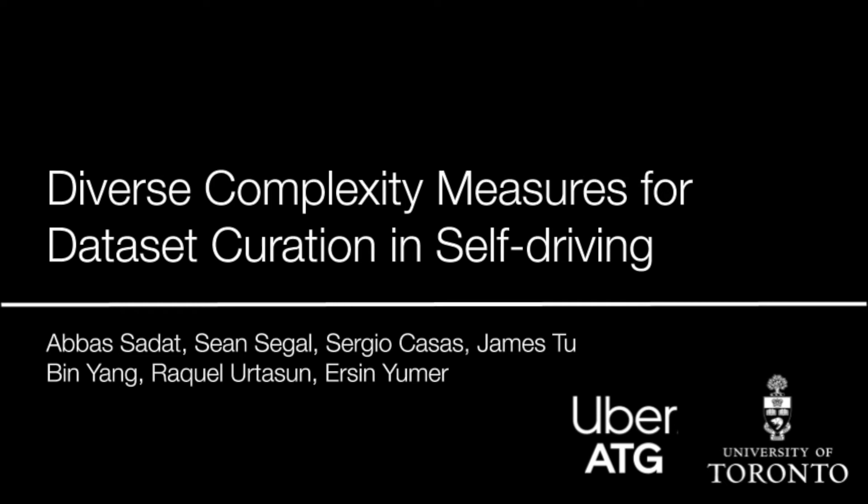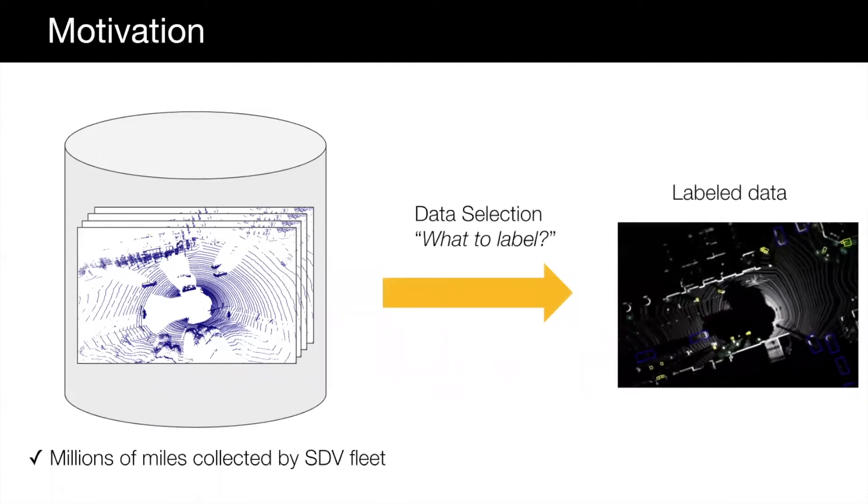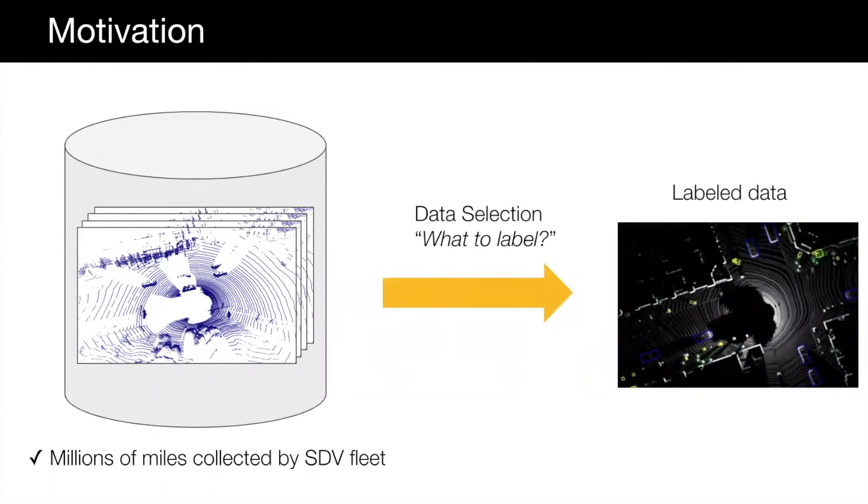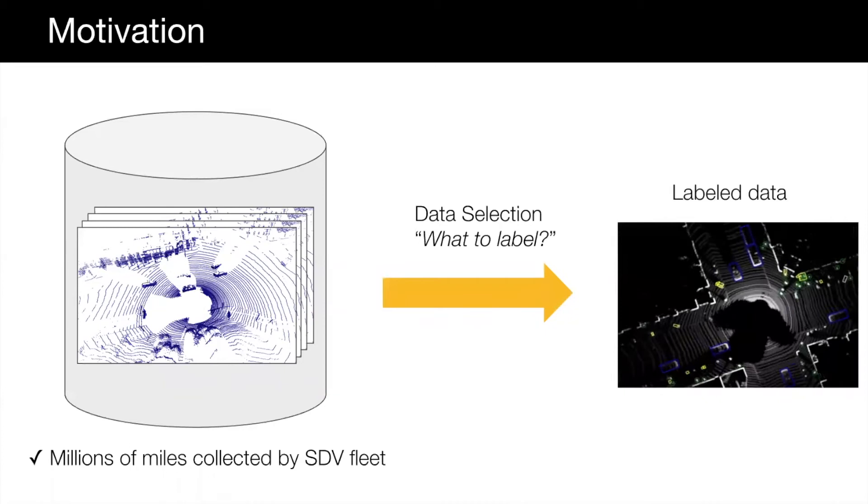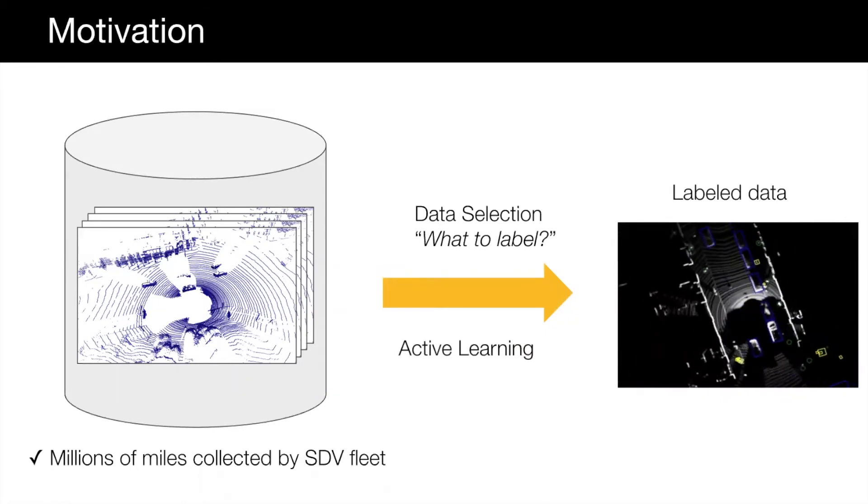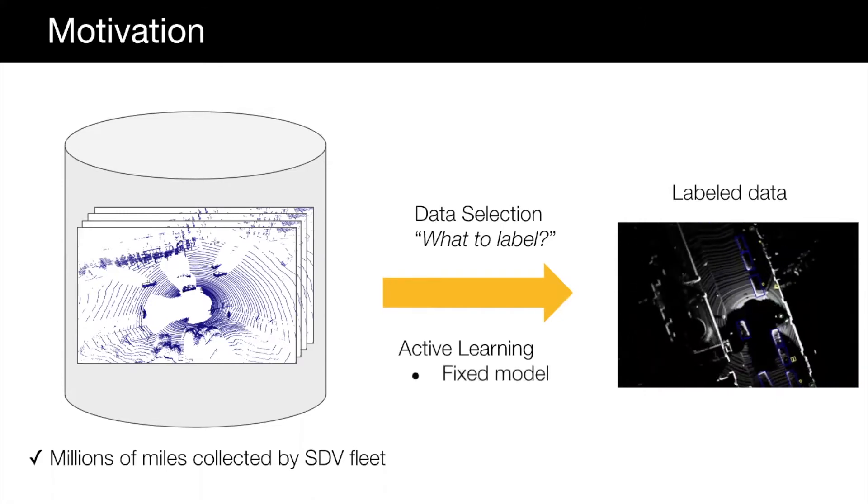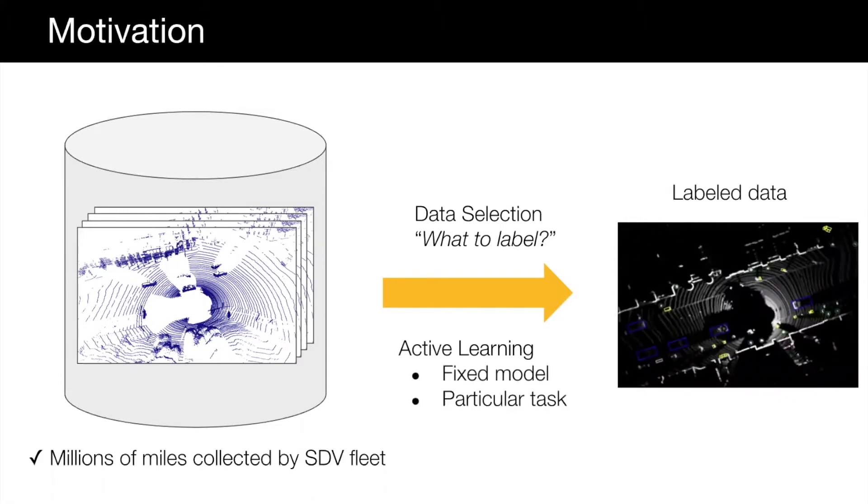Diverse Scenario Measures for Dataset Curation in Self-Driving. Fleets of self-driving vehicles can collect hours of raw data on a daily basis. Since it is not feasible to label everything, it is of key importance to have a way to identify what to label. Active learning approaches identify informative examples to label, but their interestingness is tied to a fixed model performing a particular task.